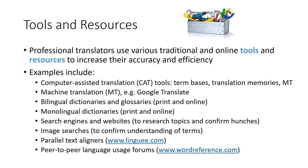We'll also discuss tools and resources — herramientas y recursos — used in translation. Professional translators use many traditional and online tools for effectiveness, accuracy, and efficiency. One major category is computer-assisted translation suites, or CAT tools — software suites that include multiple tools such as terminology bases, translation memories, machine translation, and project management, all rolled into one.